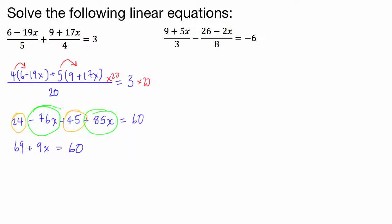So once I've got this, I can take 69 from both sides, and I'm left with 9x is equal to negative 9. I'm going to divide both sides by 9, and then I'm left with x is equal to negative 1. Cool.